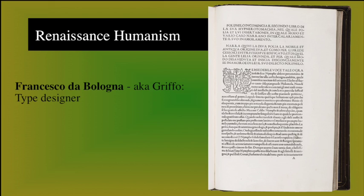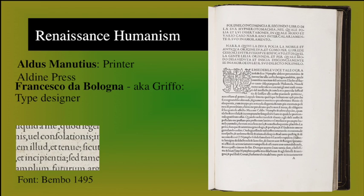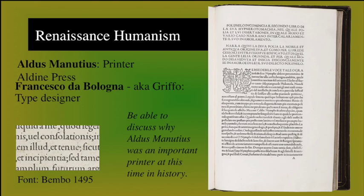Aldus Manutius was an important humanist and scholar. He established a printing press in Venice to realize his vision to publish the major works of the great thinkers of Greek and Roman cultures. He recruited skilled technicians, such as the brilliant type designer Francisco de Bologna, also known as Griffo, and important scholars to staff his Aldine Press. He rapidly became known for his scholarship and editorial authority. We see the type specimen sheet created by probably the most important person on Manutius' staff, Francisco de Bologna, also known as Griffo. The book is called Aetna by Pietro Bembo in 1495. Griffo used a pre-Caroline script to produce this Roman type. He was amazingly brilliant, and this type style still survives today, known as Bembo. Be able to discuss why Aldus Manutius was an important printer at this time in history.